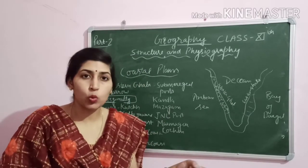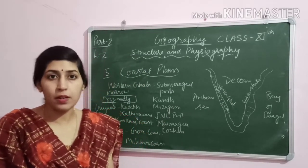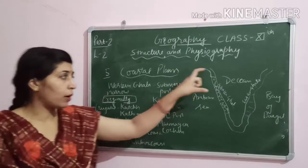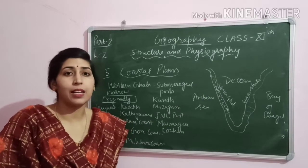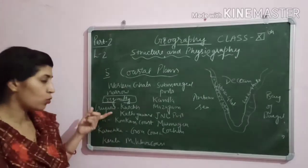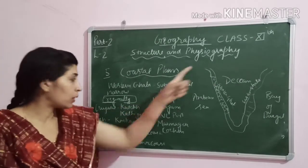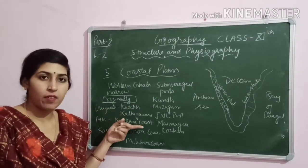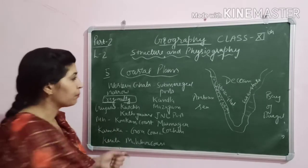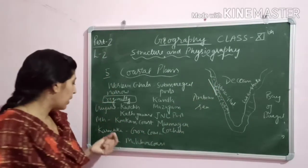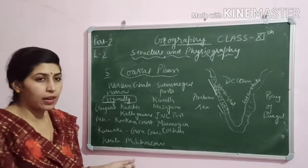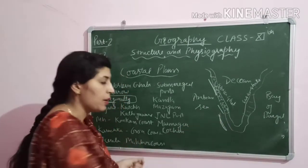Regionally and state-wise the western coastal plain has different names. In Gujarat it is called the Kutch and Kathiawar plain. In Maharashtra it is called Konkan. In Karnataka it is the Goa sea coast, and in Kerala it is known as the Malabar Coast.